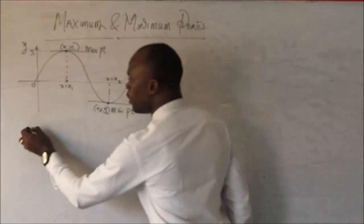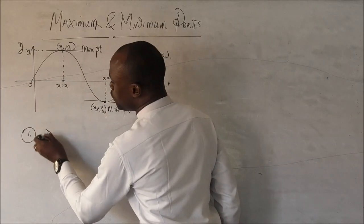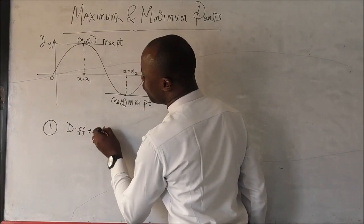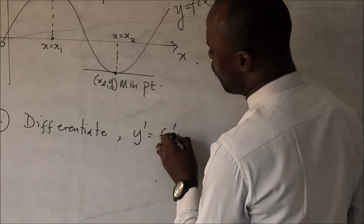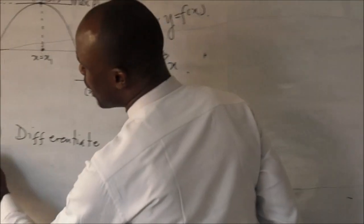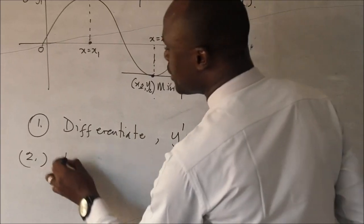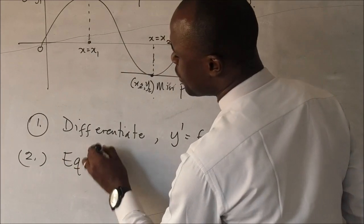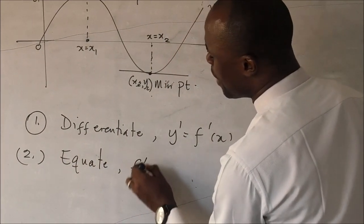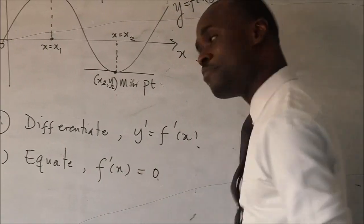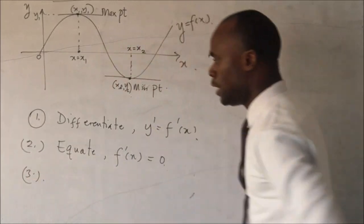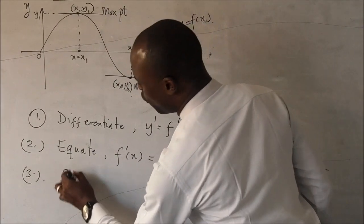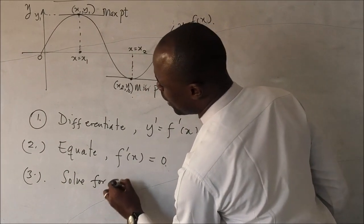Let's imagine the first point is you differentiate the function. So, the first point is to differentiate the function. And that y prime equals to f prime of x. That's the first step. The second step is to equate f prime of x to zero. The third point is to solve for x.